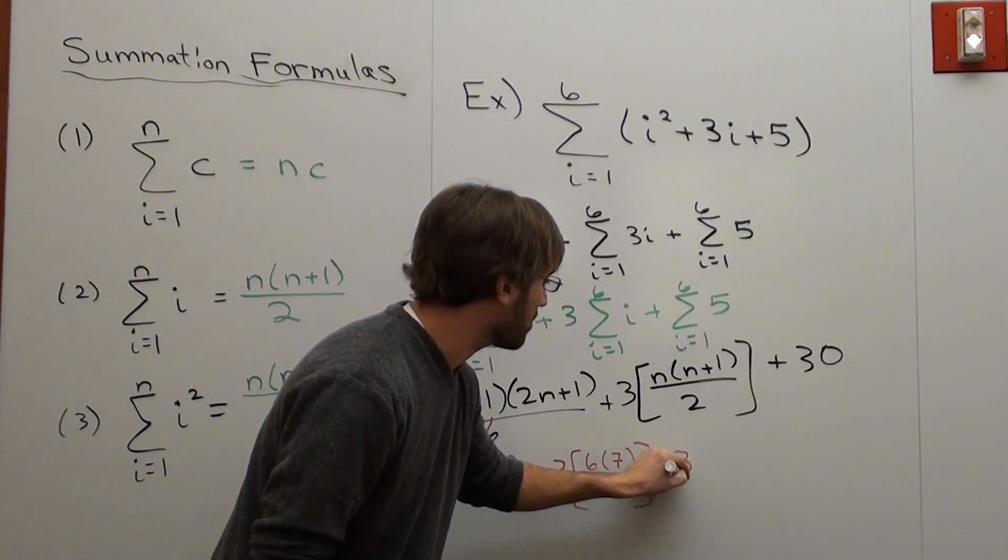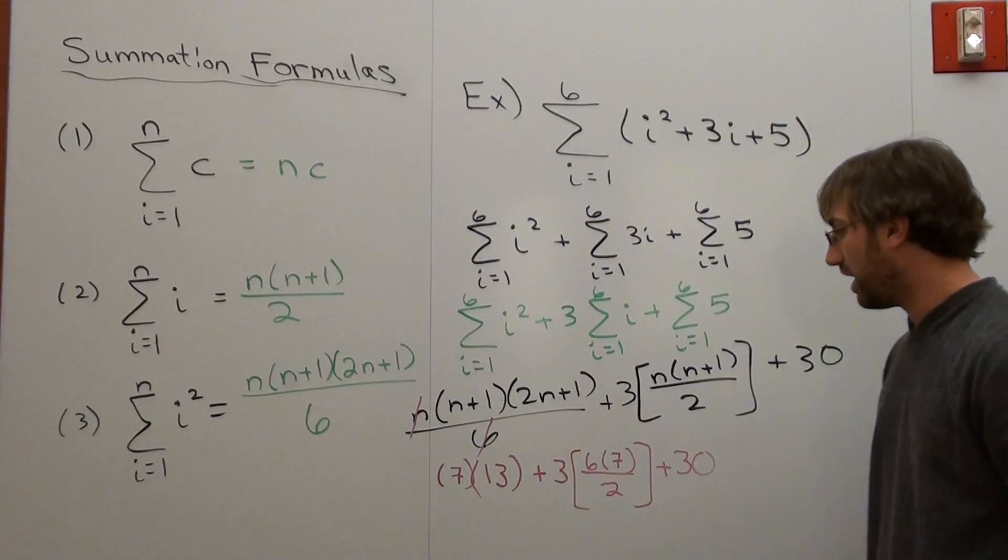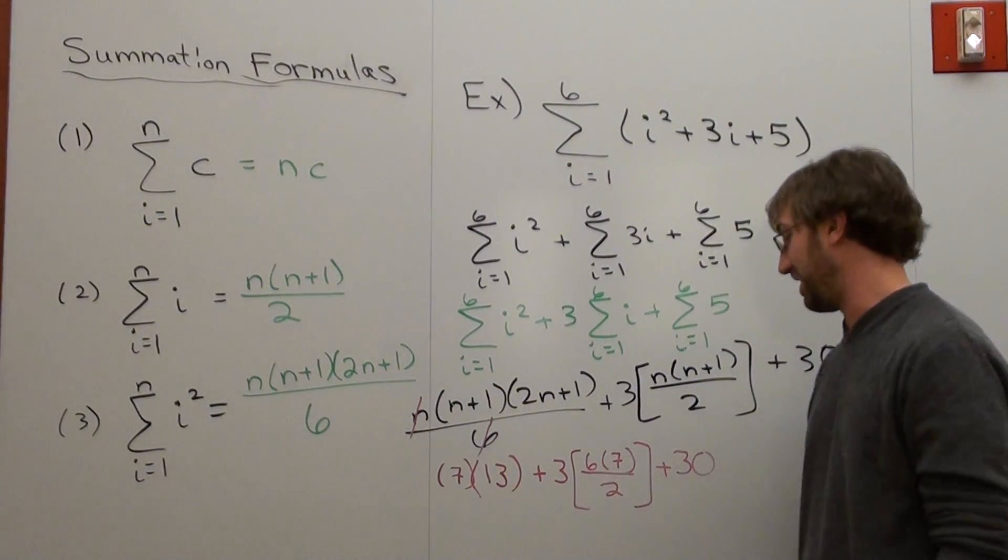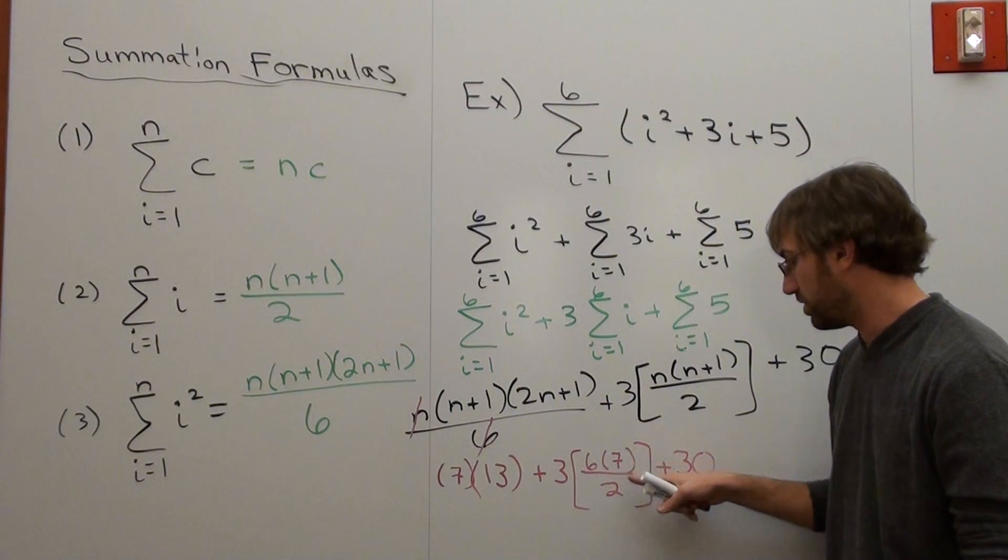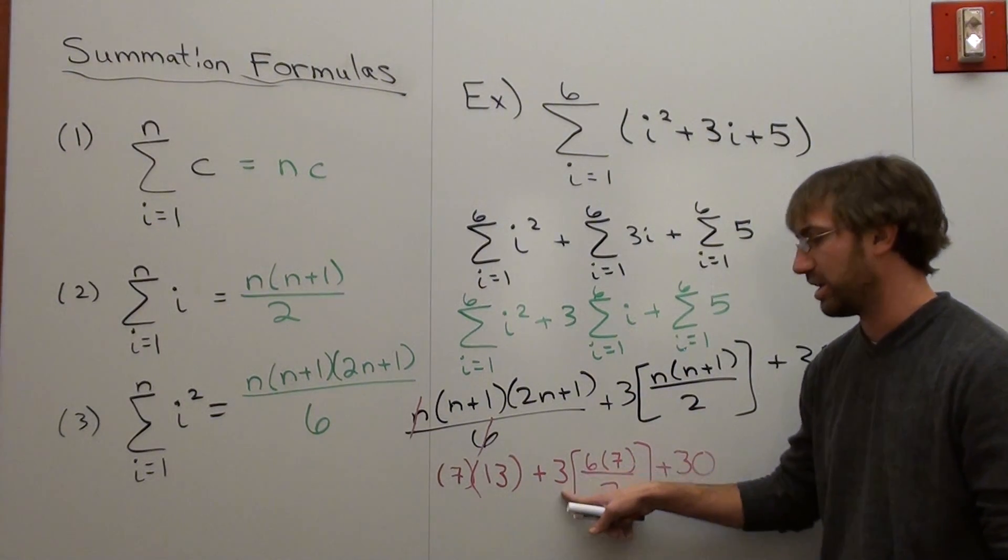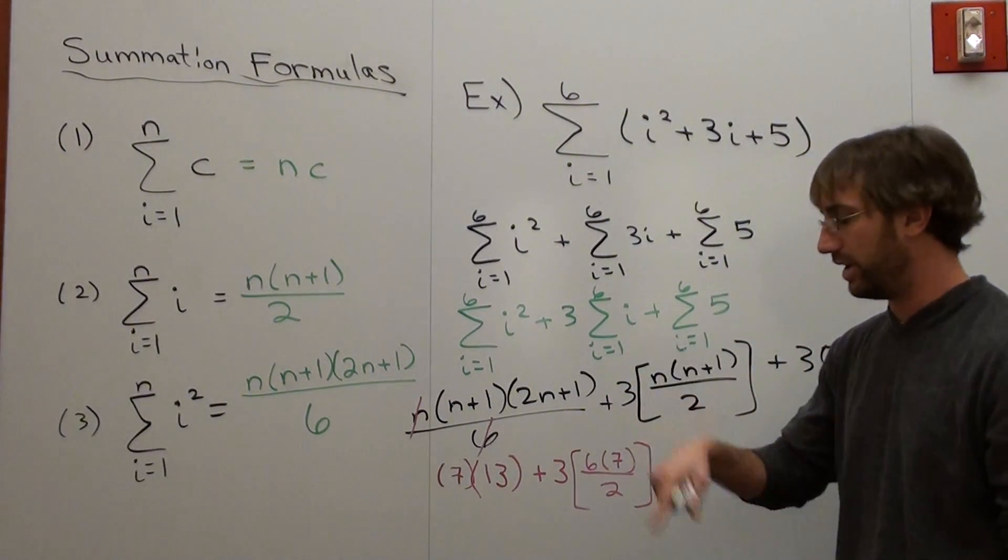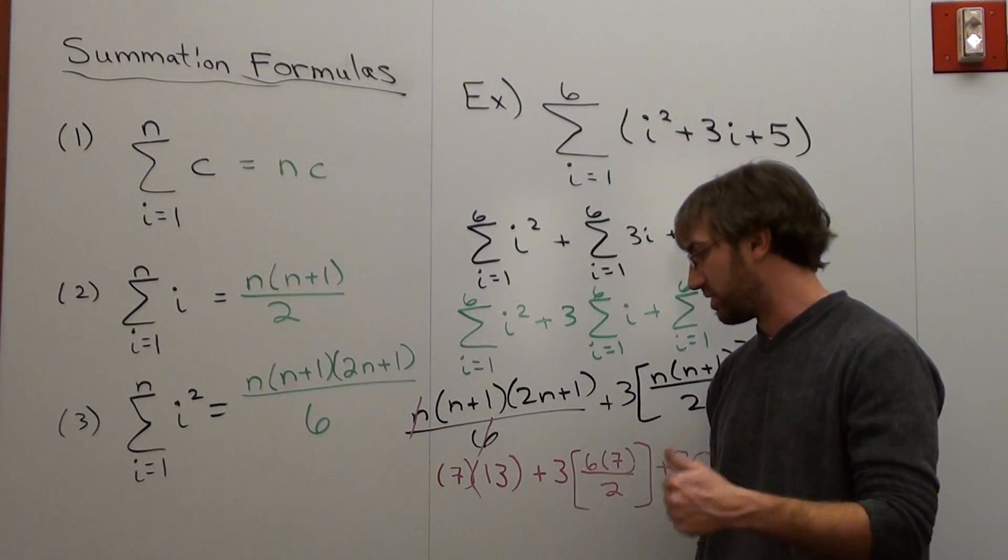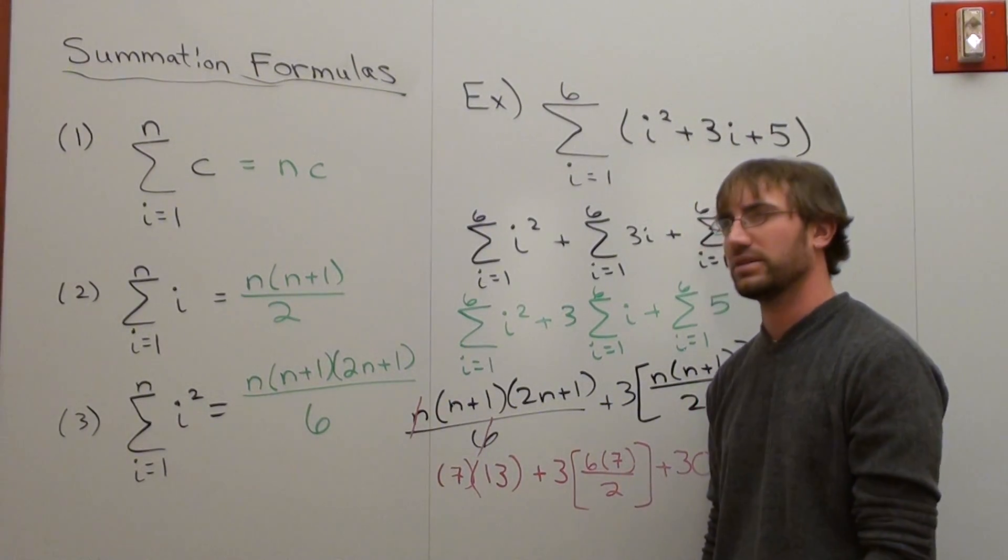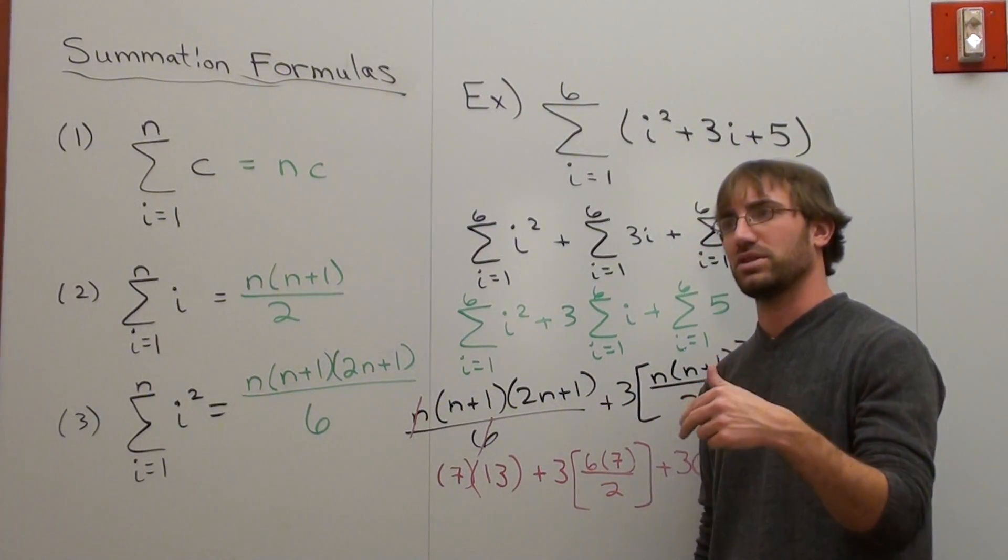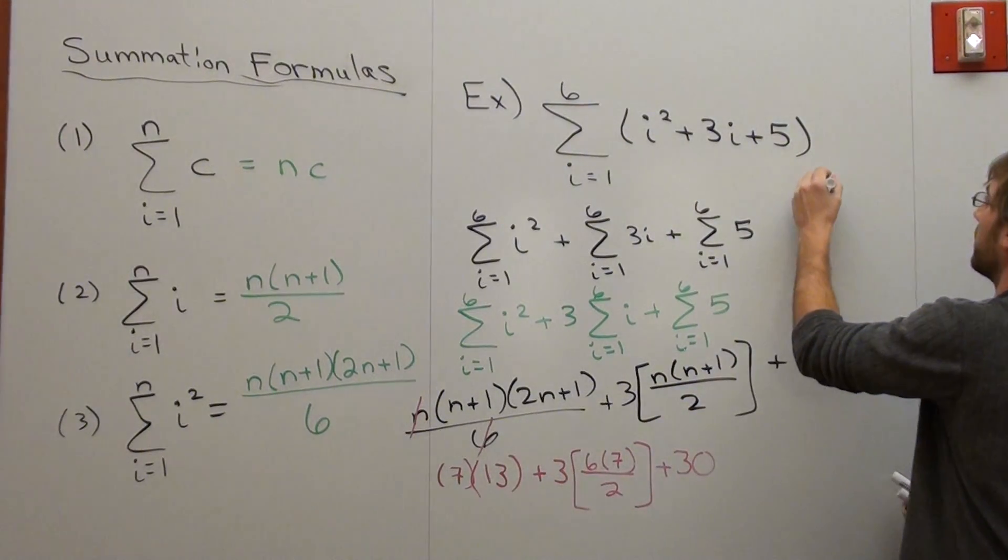Let's do a little bit of quick mental math here. I don't know what 7 times 13 is off the top of my head, so I'm going to go ahead and figure this one out first. 6 times 7 is 42. 42 divided by 2 is 21. 21 times 3 is 63. 63 plus 30 is 93. Good. 7 times 13, that's 13, 39, which means it's got to be 78 plus 13, which is 91. So, this is 91.